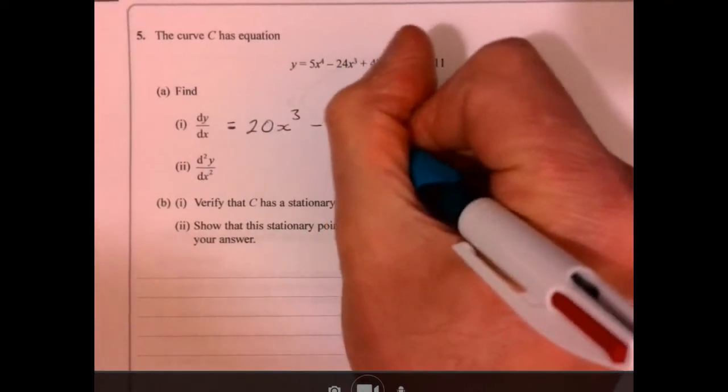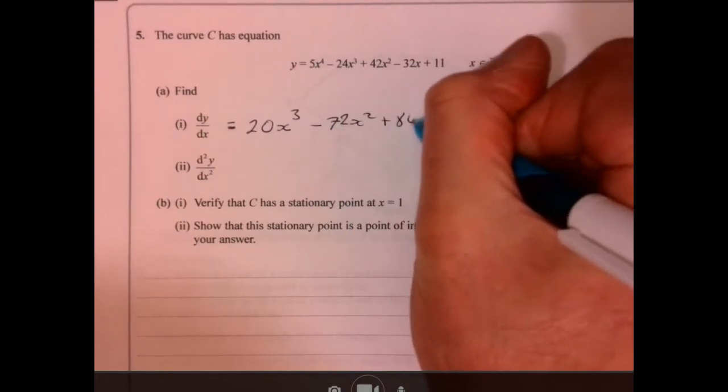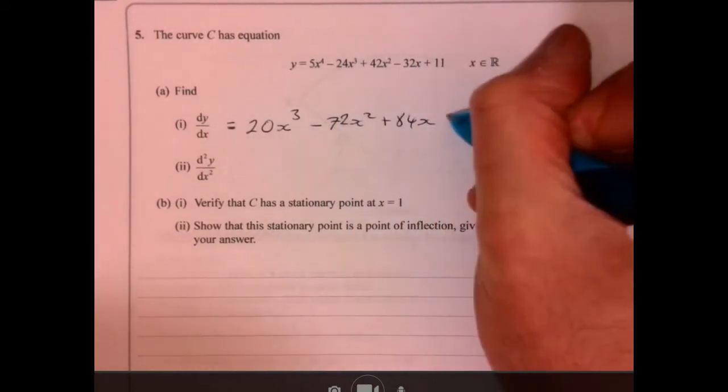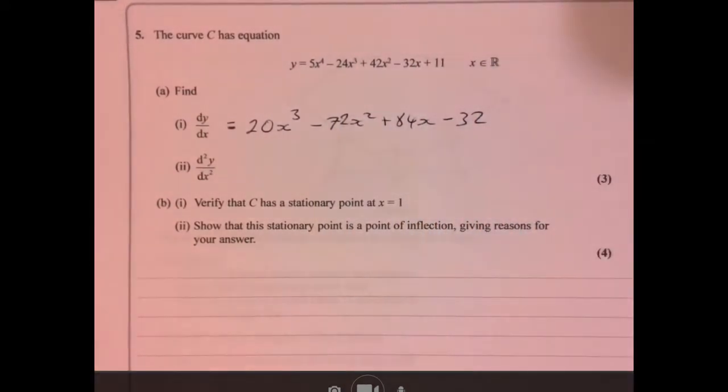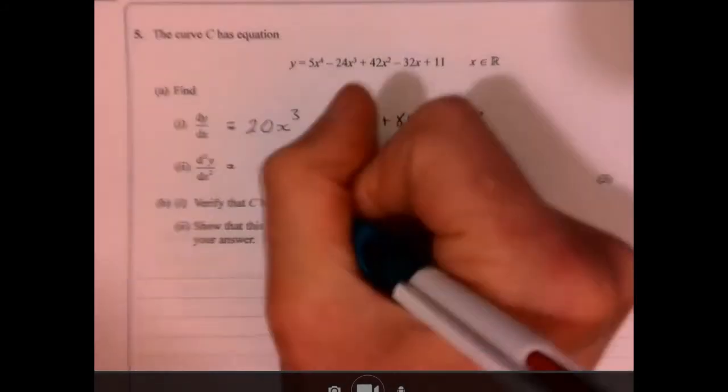So 3 times 4, so that's 72x² plus 84x minus 32. Oh, let's just do it again, alright. That's going to be the easiest 3 marks we're ever going to get.